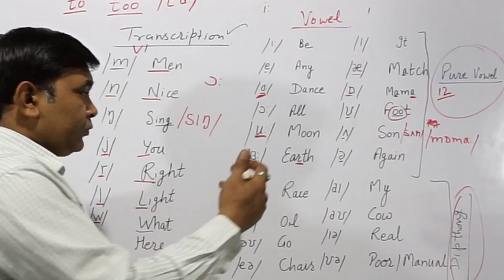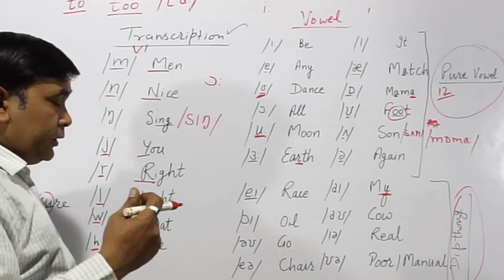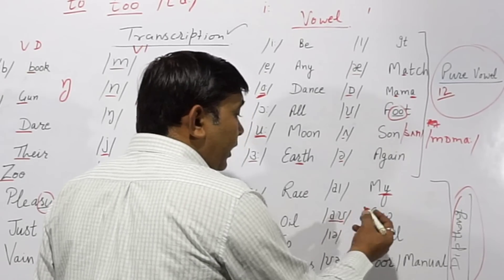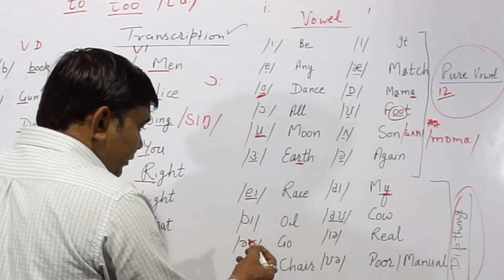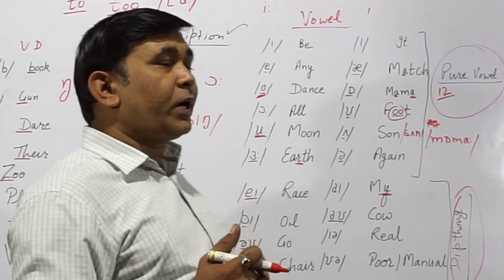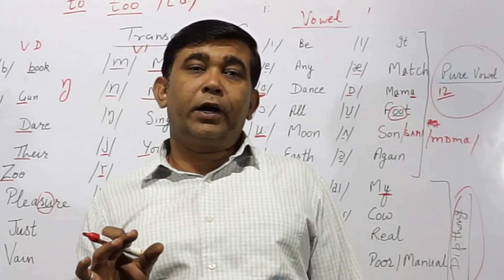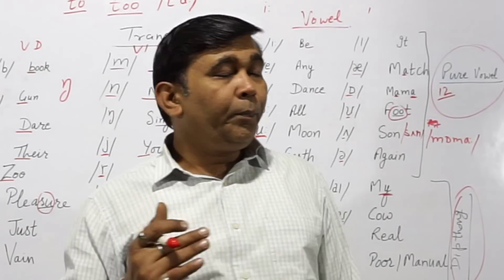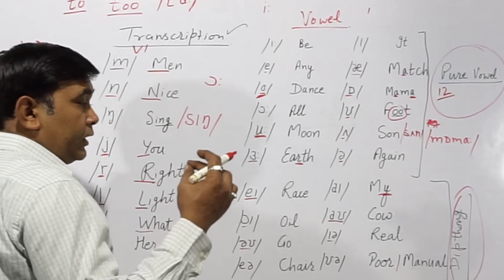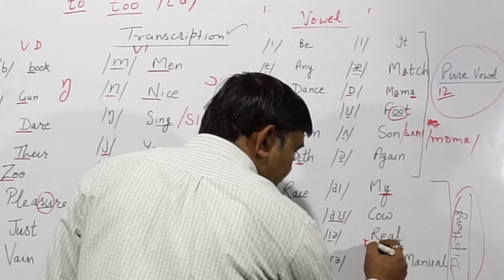Now diphthongs. First is /eɪ/ — as in 'race'. It is not 'race' flat — it is /eɪ/. Next is /aɪ/ — as in 'my'. Then /ɔɪ/ — as in 'oil', 'coil'. Then /əʊ/ — as in 'go'. We usually say 'go' with a round lip but there is no round lip vowel sound — it is /əʊ/.